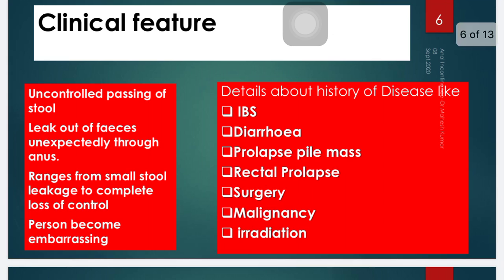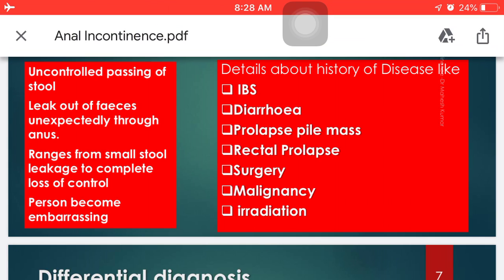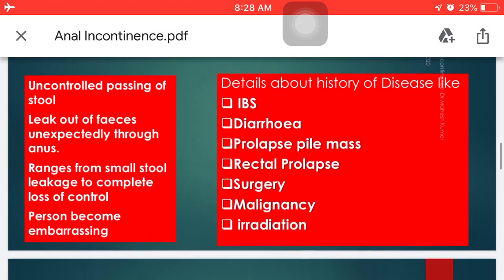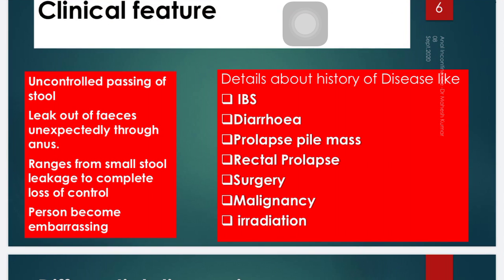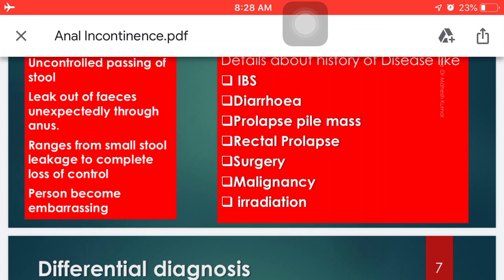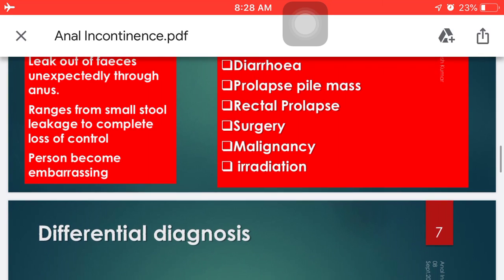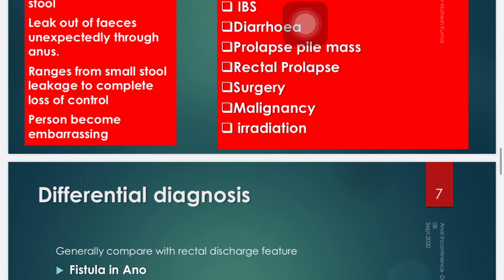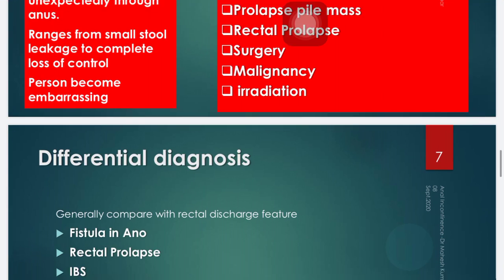What are the clinical features of anal incontinence? The uncontrolled passing of stool and unexpected leakage of feces, with features ranging from small stool or gas leakage to complete loss of control of stool. The persons become embarrassed. Relevant history includes IBS (irritable bowel syndrome), inflammatory bowel disease, diarrhea, prolapsed pile mass, rectal prolapse, surgery at the anorectal region, malignancy at the anorectal region, and irradiation or radiotherapy at anorectal regions.